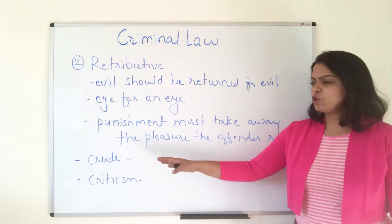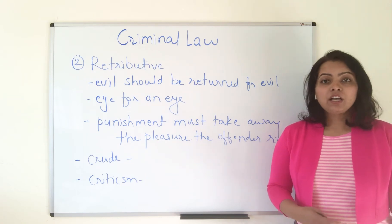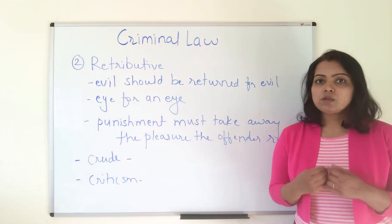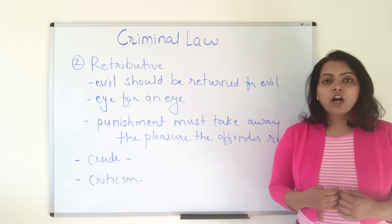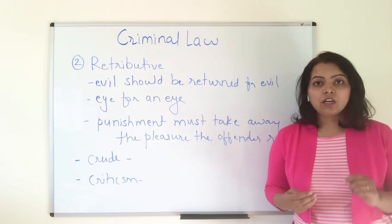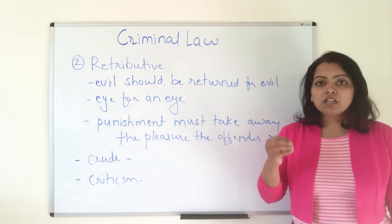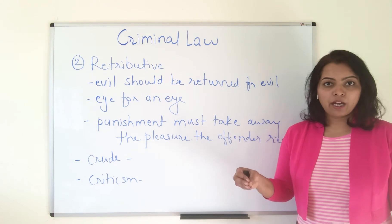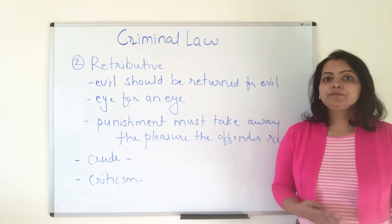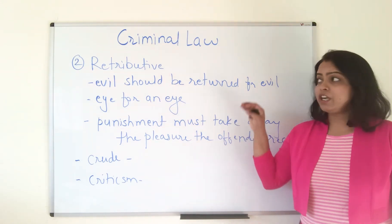According to modern criminologists, retributive theory is a very crude theory that promotes the instinct to take revenge. It is further criticized because many crimes in society are committed for economic reasons. If a person commits theft due to poverty, mechanical proportion between crime and punishment is not always helpful — instead, a job should be given to that person. Similarly, some crimes are committed out of psychological reasons, and in those cases retributive theory also fails.